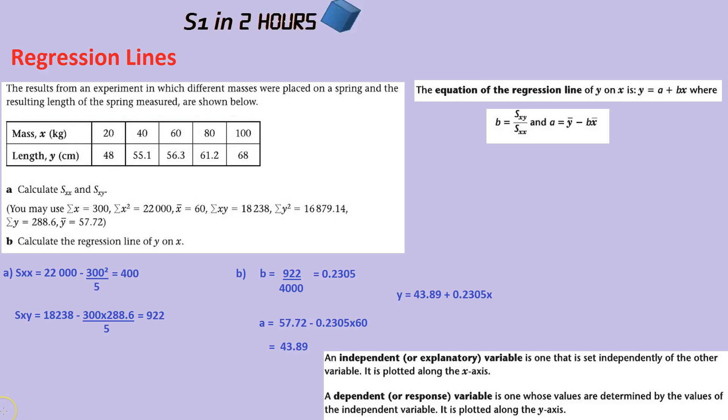This video is about regression lines, but first let's quickly talk about independent and dependent variables. The way I remember it is it's like cause and effect, so the independent variable is the cause and the dependent variable is the effect.